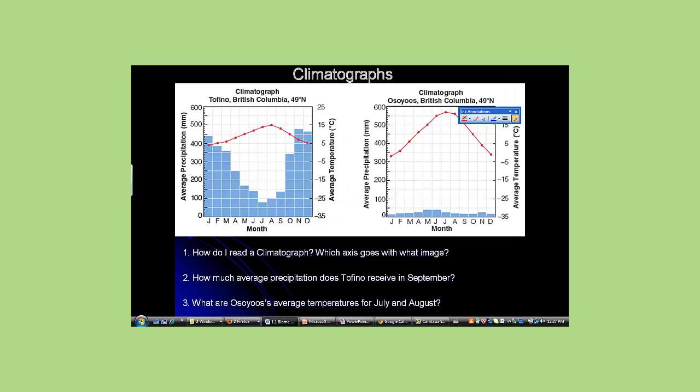Climatographs. These graphs can be confusing at first glance because there are two sets of data being represented, precipitation and temperature. There are also separate vertical axes with their own units, millimeters of rain and degrees Celsius. It is easy to forget which data set goes with which axis. Luckily, you have had many years of experience that can help you.